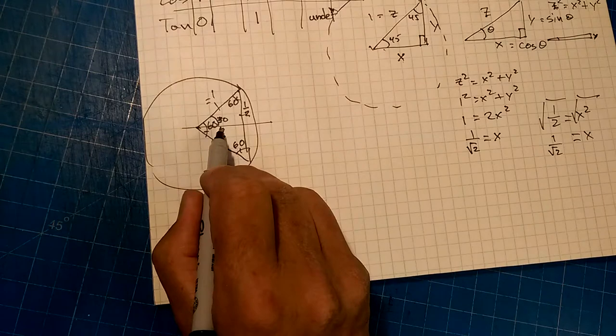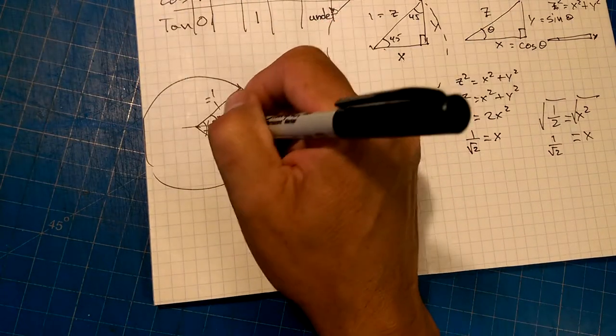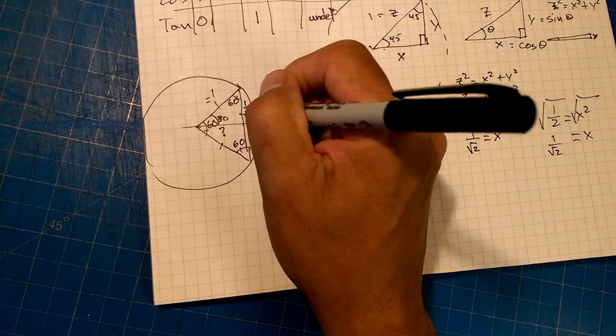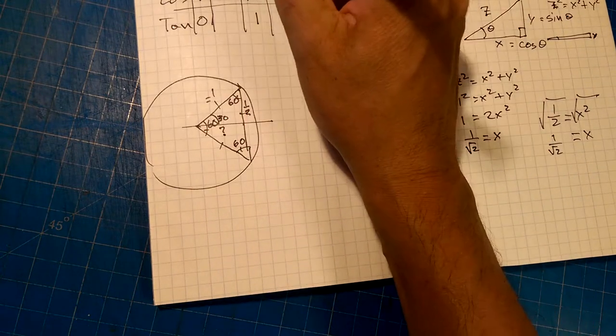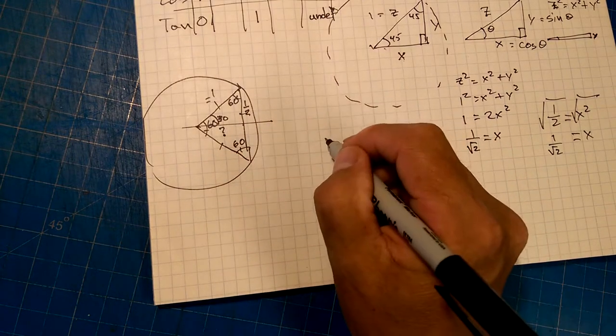What's the cos of 30? Well, what's the cos of 60? That's adjacent, so that's 1 half. And now, that just leaves us to figure out what this is.